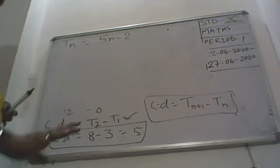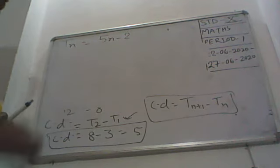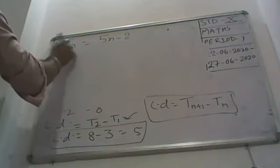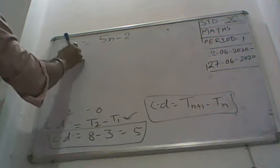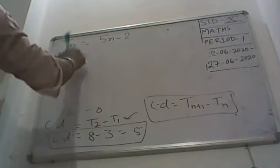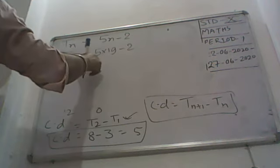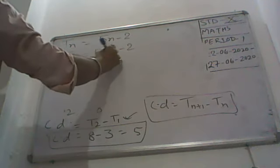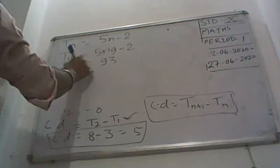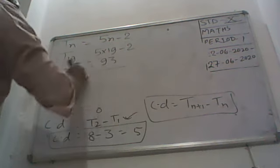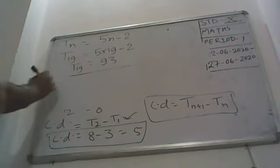Now last question, find the 19th term here. No need to apply this one, don't make it complicated, make it very simple. T19 they are given, so I am writing T19 here, that means N will be replaced by 19 here minus 2. So that is 95 minus 2, it is equal to 93. So your T19, that is 19th term, is equal to 93.